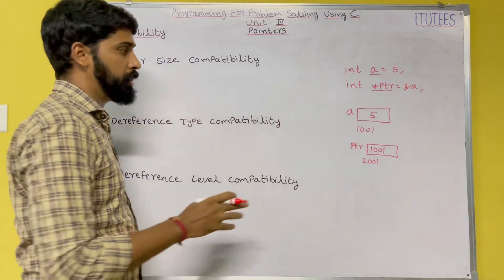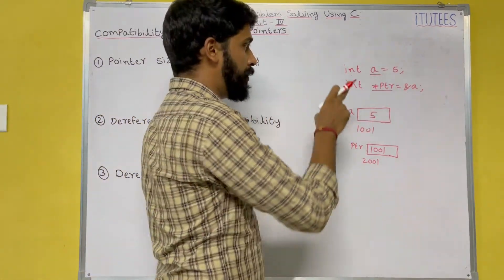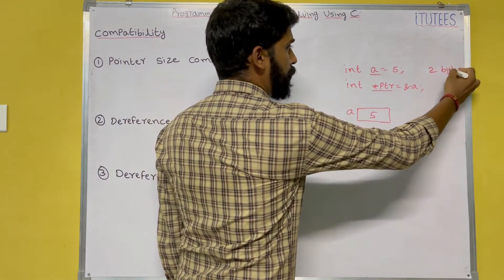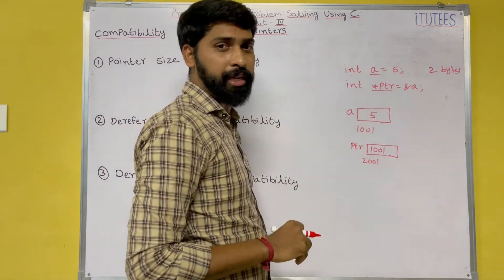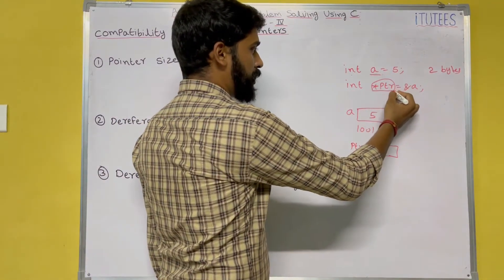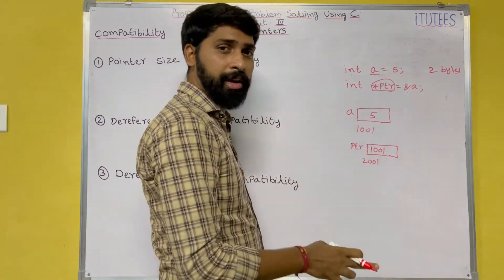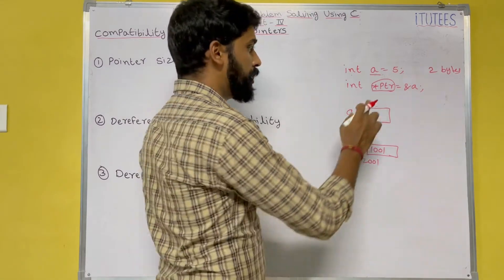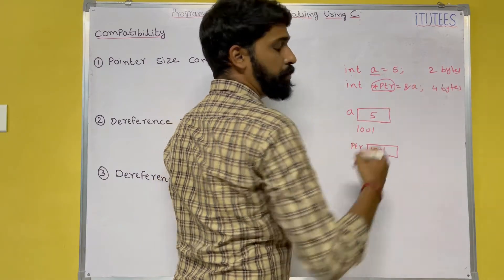The first one is pointer size compatibility. In this example, a is an integer variable so it occupies two bytes. Now what is the size of the pointer ptr? It is an integer pointer, but the pointer is a memory location in the computer. All memory locations have the same size — based on the compiler, let us assume it is four bytes.